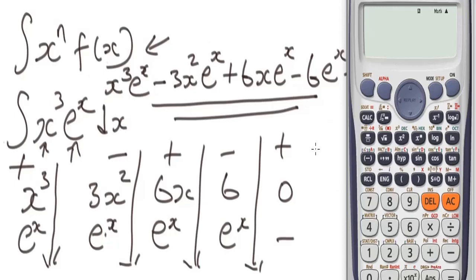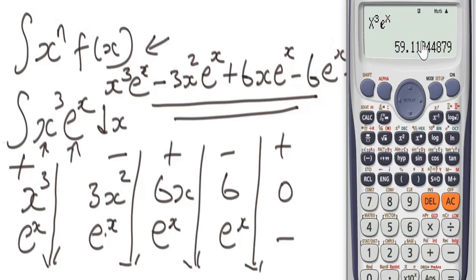Now evaluate the original integral function first. We calculate x³·eˣ at x=2, which gives us approximately 59.11. The next step — the last step — is to differentiate our answer. If differentiating it gives back 59.11, that tells us our answer is valid.